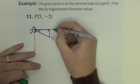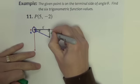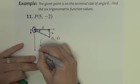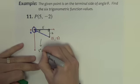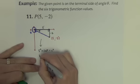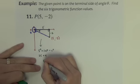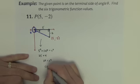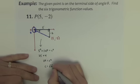This is 5. This is negative 2. This side comes from Pythagorean's theorem. 5 squared plus negative 2 squared equals c squared. 25 plus 4, which is 29 equals c squared. So c is the square root of 29.